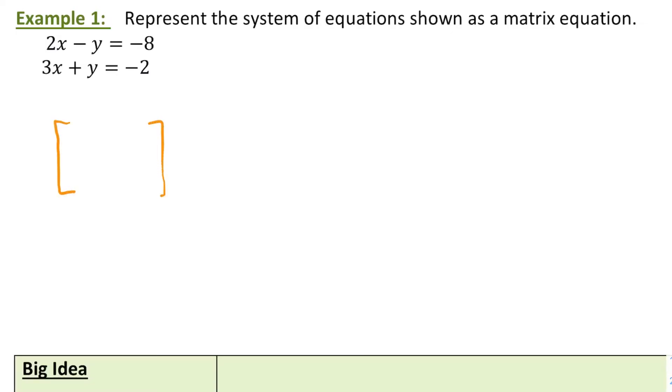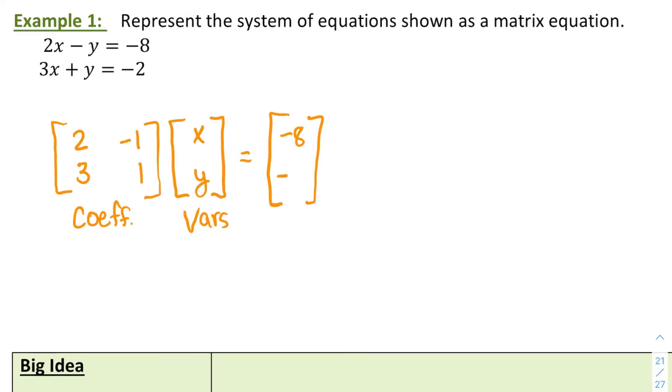So we're going to use that idea to write a system of equations as a matrix equation. So what that's going to look like is I'm going to have a matrix that represents my coefficients, my variables, and that's going to be equal to my constants. So I'll have 2 and 3 for my coefficients on x, negative 1 and y for those coefficients. x and y are my variables, and negative 8 and negative 2 are my constants.